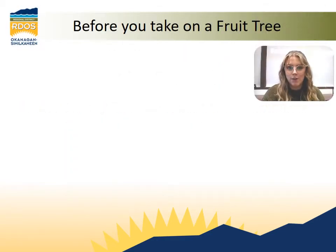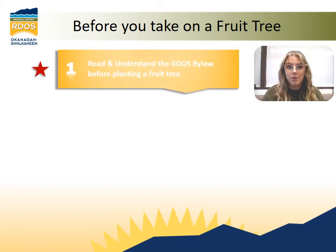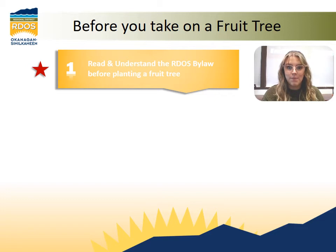Before planting your fruit tree, or even if you have just inherited a fruit tree during a recent move, it's important to understand these five essential tasks before taking it on. The most important thing is to understand the RDOS bylaw on the RDOS webpage for fruit tree pests. It states the responsibility of the homeowner to prevent and control insect pest infestations and explains the steps that occur if there is a complaint about your fruit tree. This is important because if there is any negligence to general care and pest prevention, an insect infestation can affect the livelihood of neighboring commercial orchards.